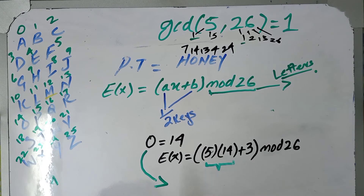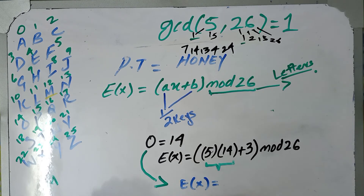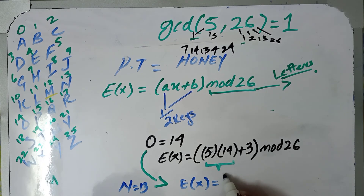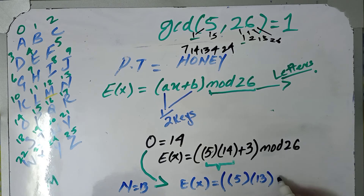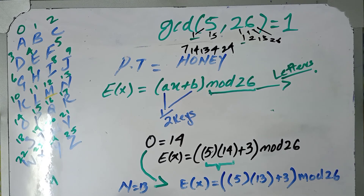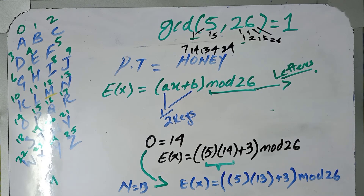For N, we use the same procedure. N equals 13, so the formula gives us: 5 times 13 plus 3, modulus 26. You will have to calculate this value to find the letter which will replace N. You'll have to solve it for O, N, E, and Y, and then you will have the full cipher text.